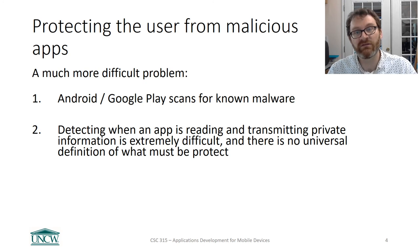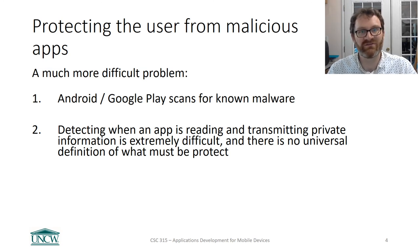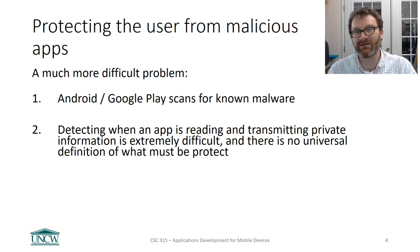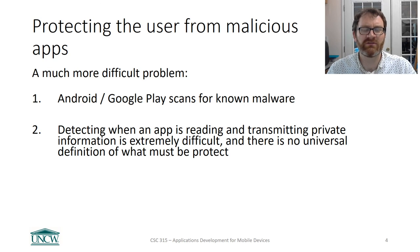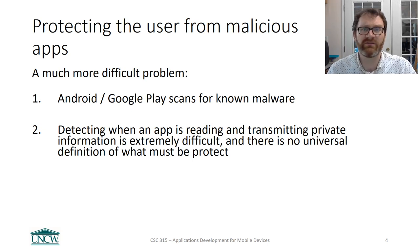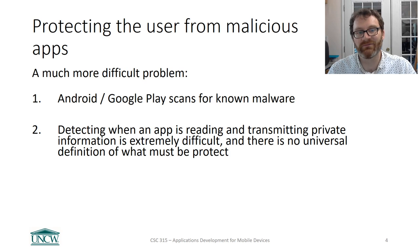Malicious also means stealing your information or transmitting data to places you don't anticipate — and this is by far the most common thing. We just had an incident where researchers discovered that the Zoom application on Mac was calling some Facebook APIs and potentially transmitting data there. It's much more difficult to discover when apps are transmitting data somewhere the user wouldn't want. A lot of these discoveries are by accident or by security researchers looking closely — it's not something you can do at scale.